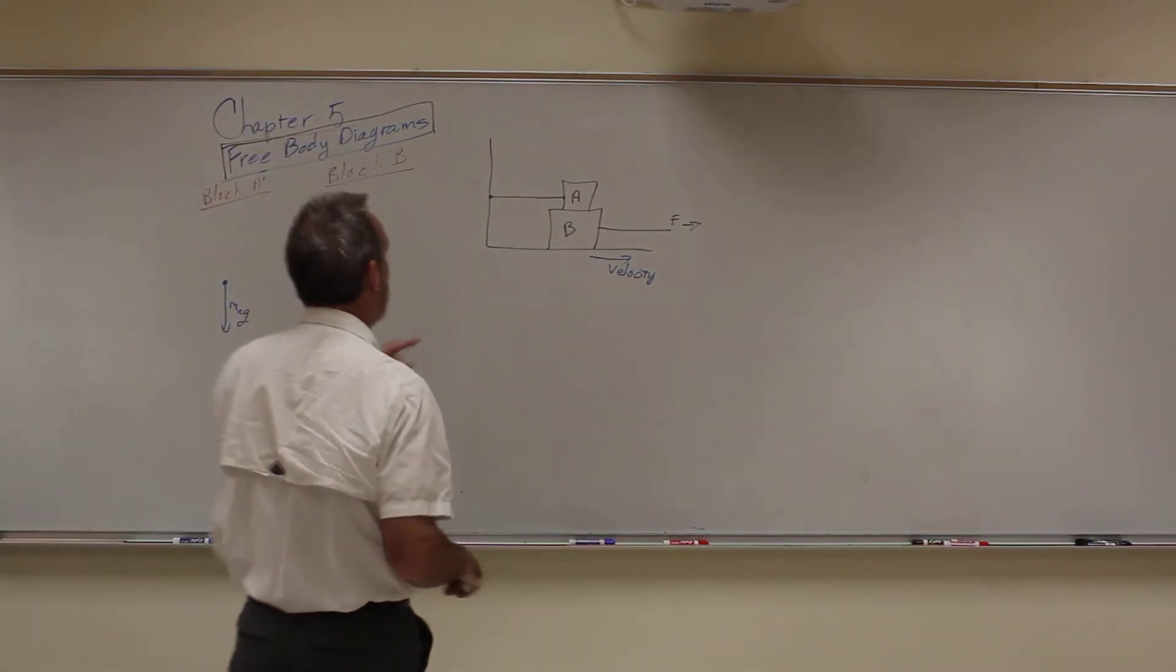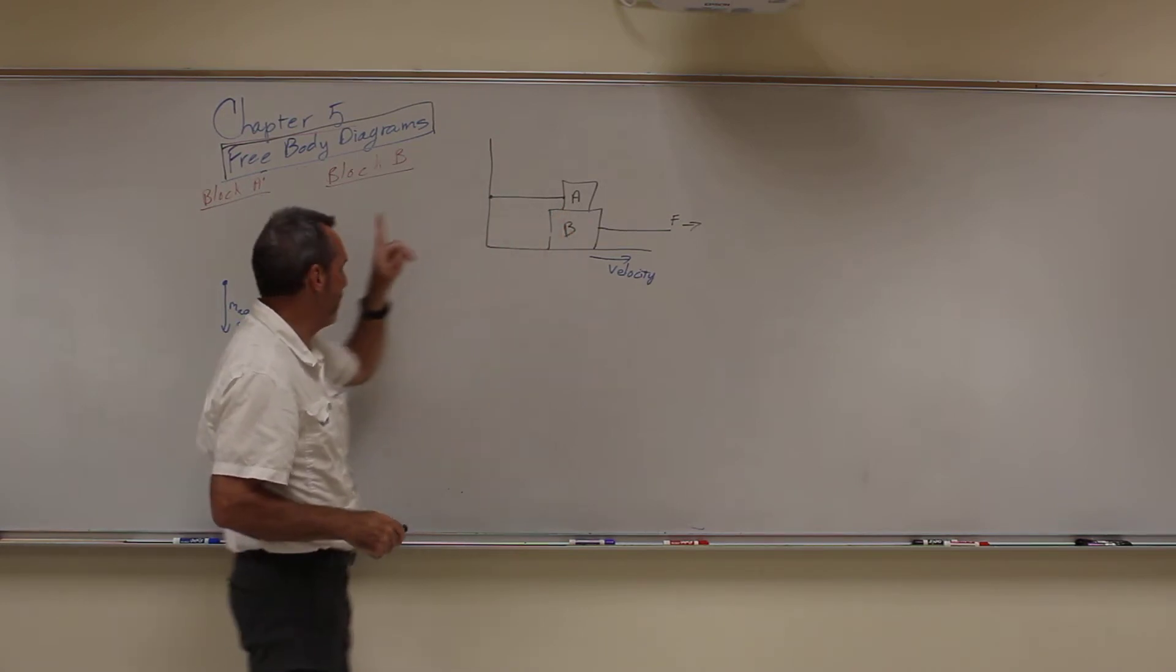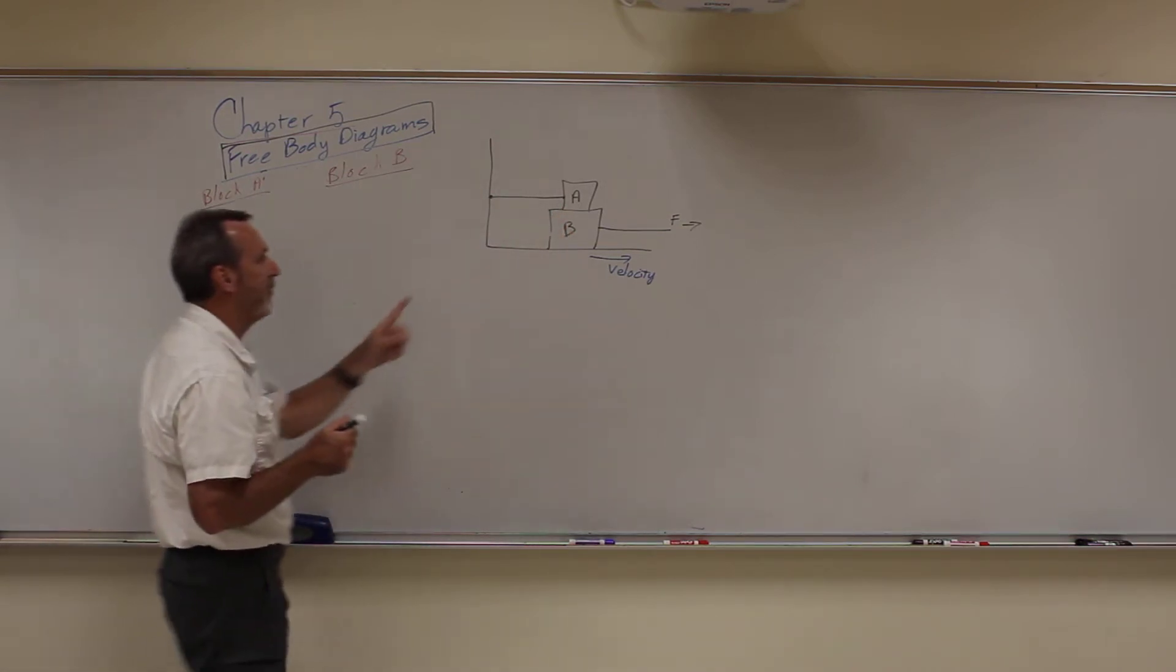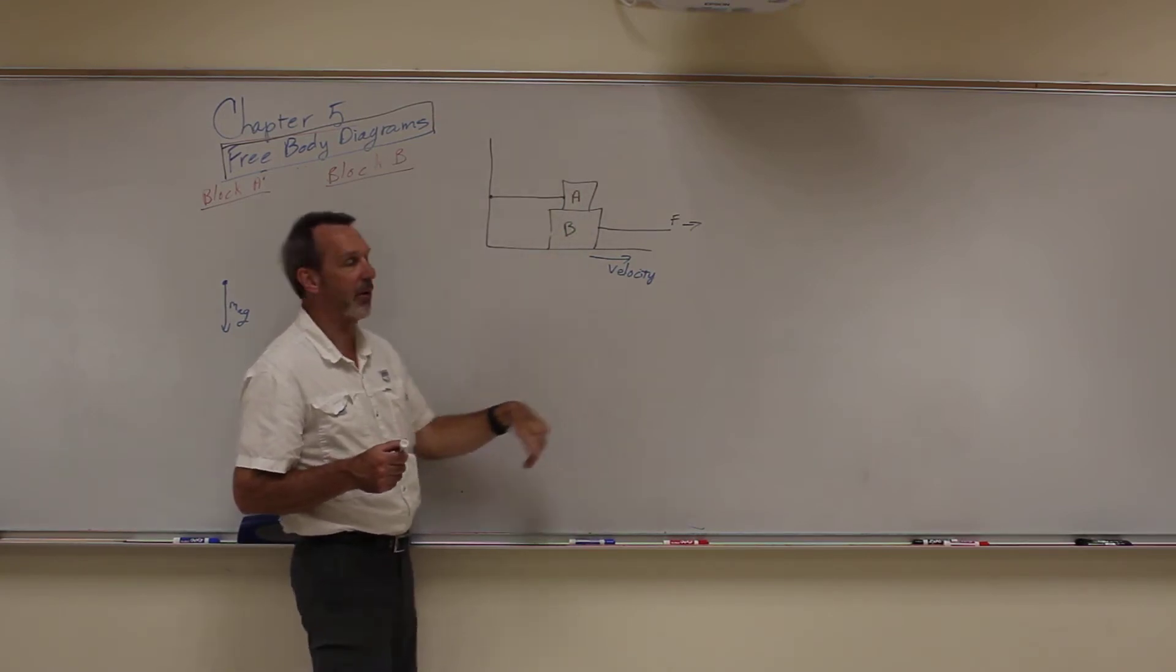Alright, so between these two blocks here, block A and block B, we have what we call a contact force. So how I'm going to draw that over here is block B is actually applying a force upward on block A. If it didn't, block A would just fall all the way to the ground, right?